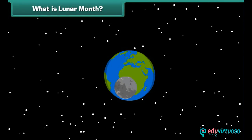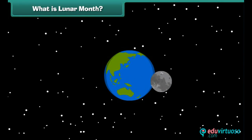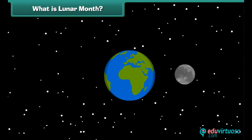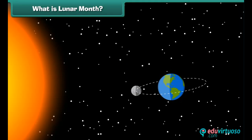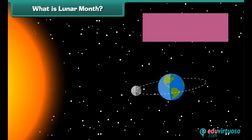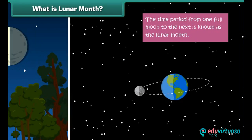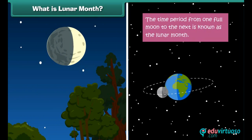The moon takes 27.3 days to orbit the Earth, but the time from one full moon to the next is 29.5 days because the Earth is also constantly moving and orbiting the Sun. We call this period from one full moon to the next the lunar month.